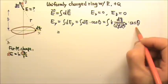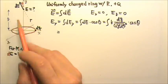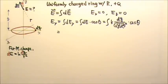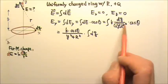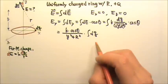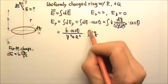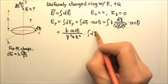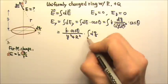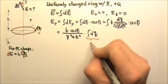Cosine theta is also the same angle for every point charge on the ring, so cosine theta is also a constant we can take out of the integral. Taking k, cosine theta, and the denominator (y squared plus R squared) out of the integral, we are left with the integral of dq. Adding all the pieces of dq together for the entire ring gives us the total charge, positive q.